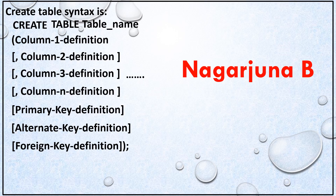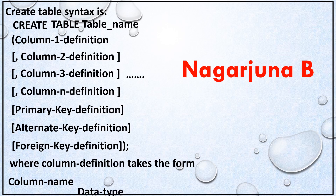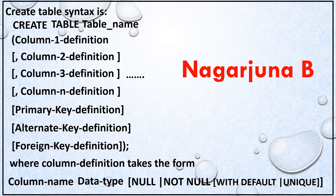The column definition takes the form: column_name, data_type, then optionally NULL or NOT NULL, and optionally WITH DEFAULT or UNIQUE. The column name is the field name of the relation. The data type specifies the kind of values you can store — for example, INT for integers, NUMBER(10) for 10-digit whole numbers, or DECIMAL(10,2) for 10 digits with 2 reserved for decimal places.